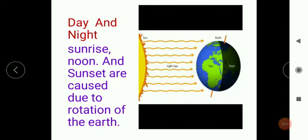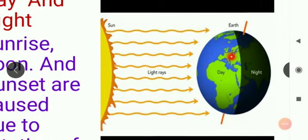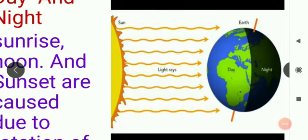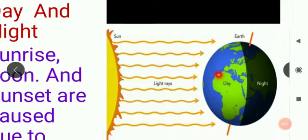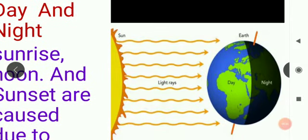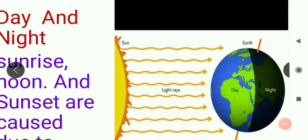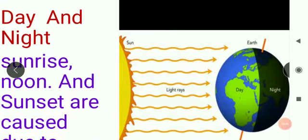Today we have to learn something about the concept of day and night. As you can see here, some part of the earth has day and some part of the earth has night. So how does this happen? The part of the earth which is close to the sun has day, and the part which is away from the sun has night.